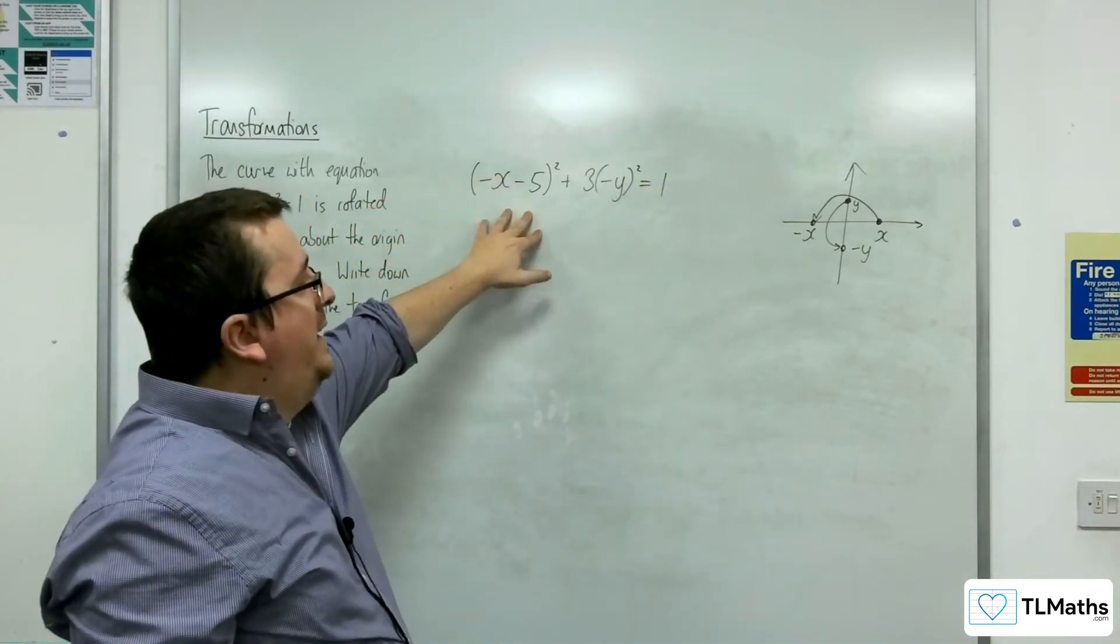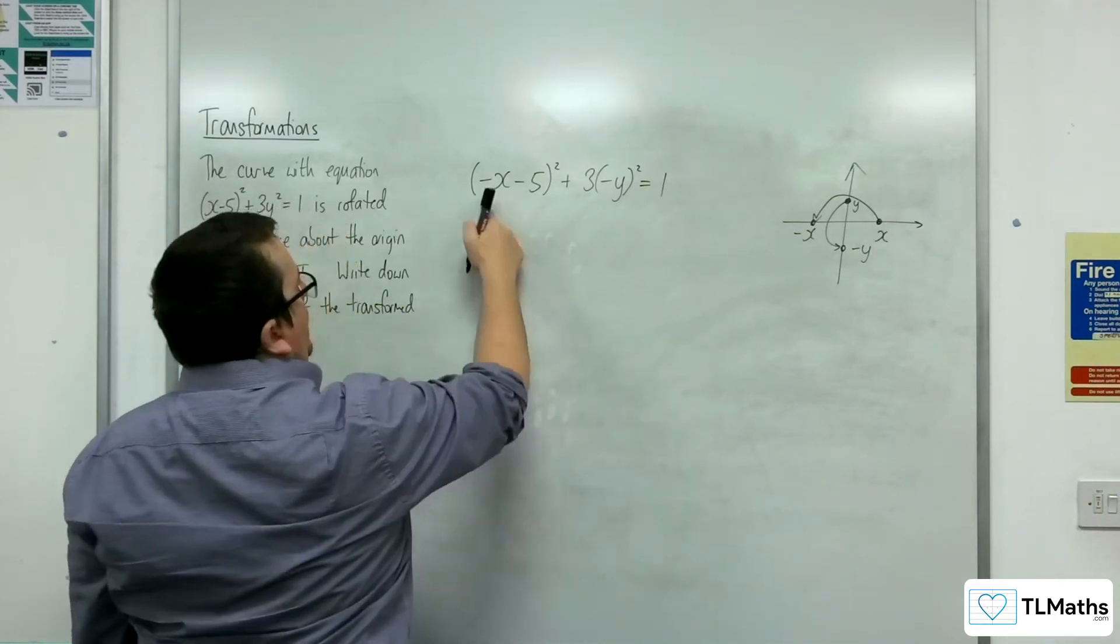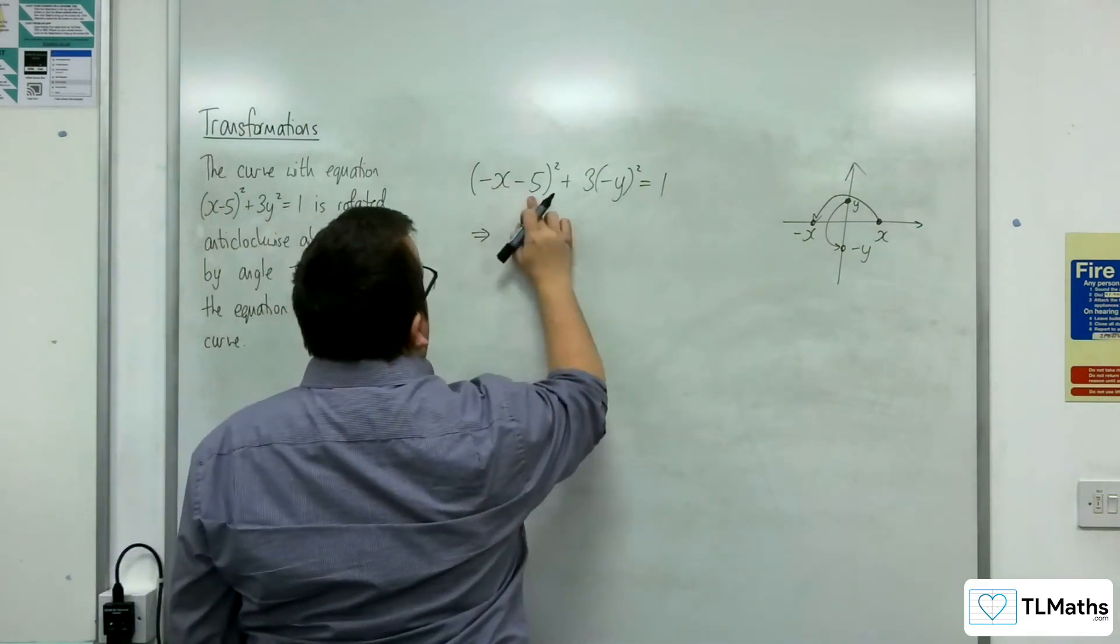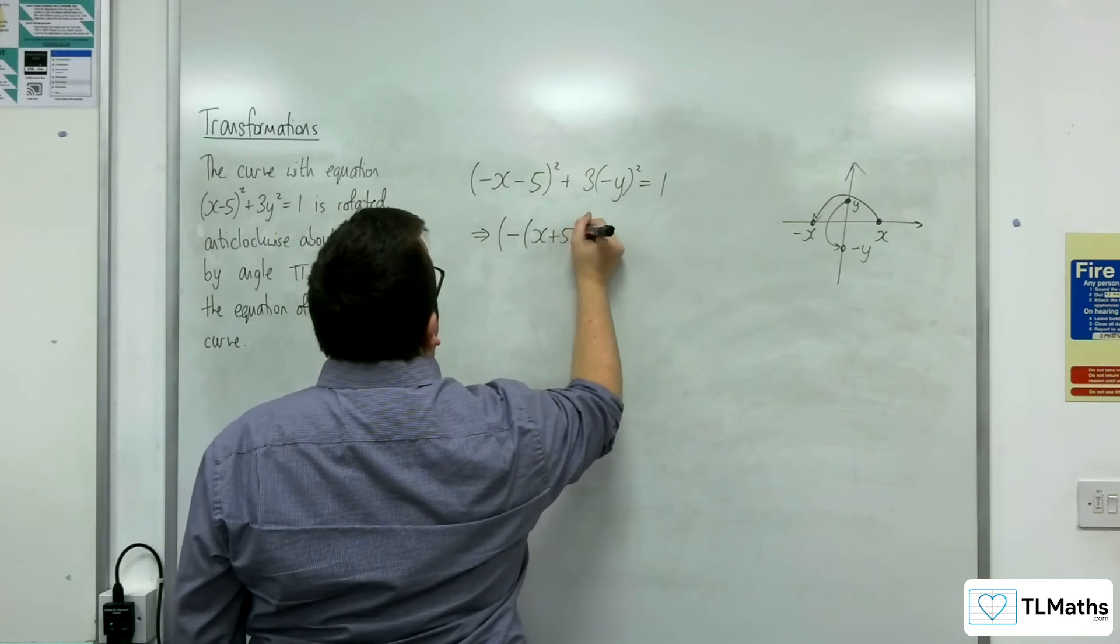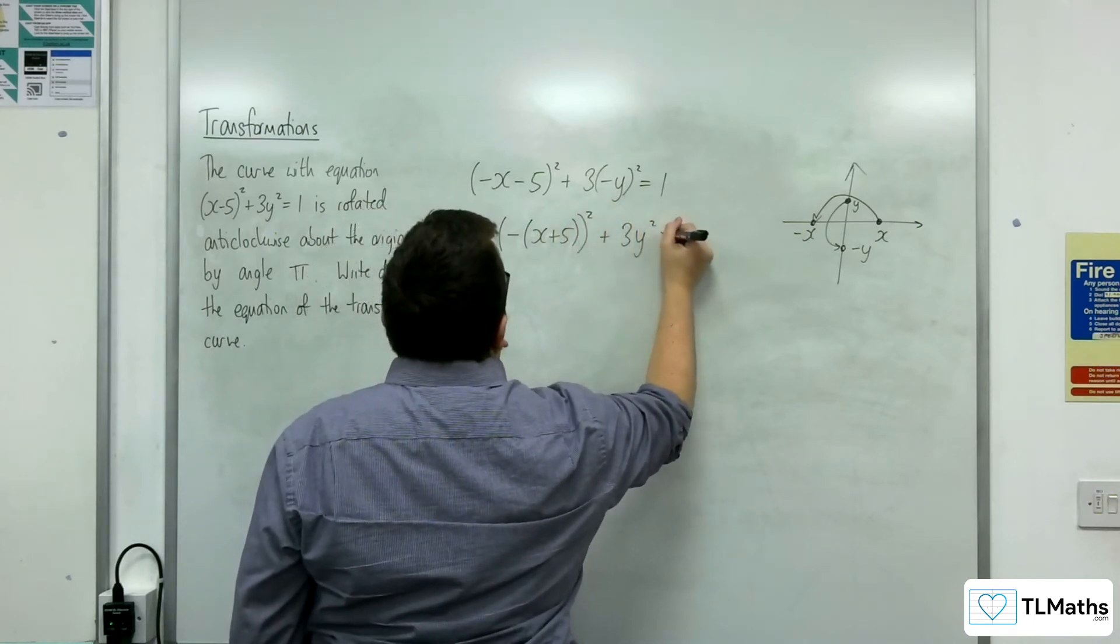Now, I wouldn't leave it written like that. The first thing I would do is factor the -1 out of this bracket because that's the same as (-x + 5)² and that's, of course, plus 3y² = 1.